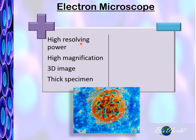If we compare with the electron microscope, the advantages are many: it has very high resolving power, very high magnification, the scanning electron microscope can give us 3D images, and we can also use thick specimens. And lately, electron microscopes are also able to generate colorful images.